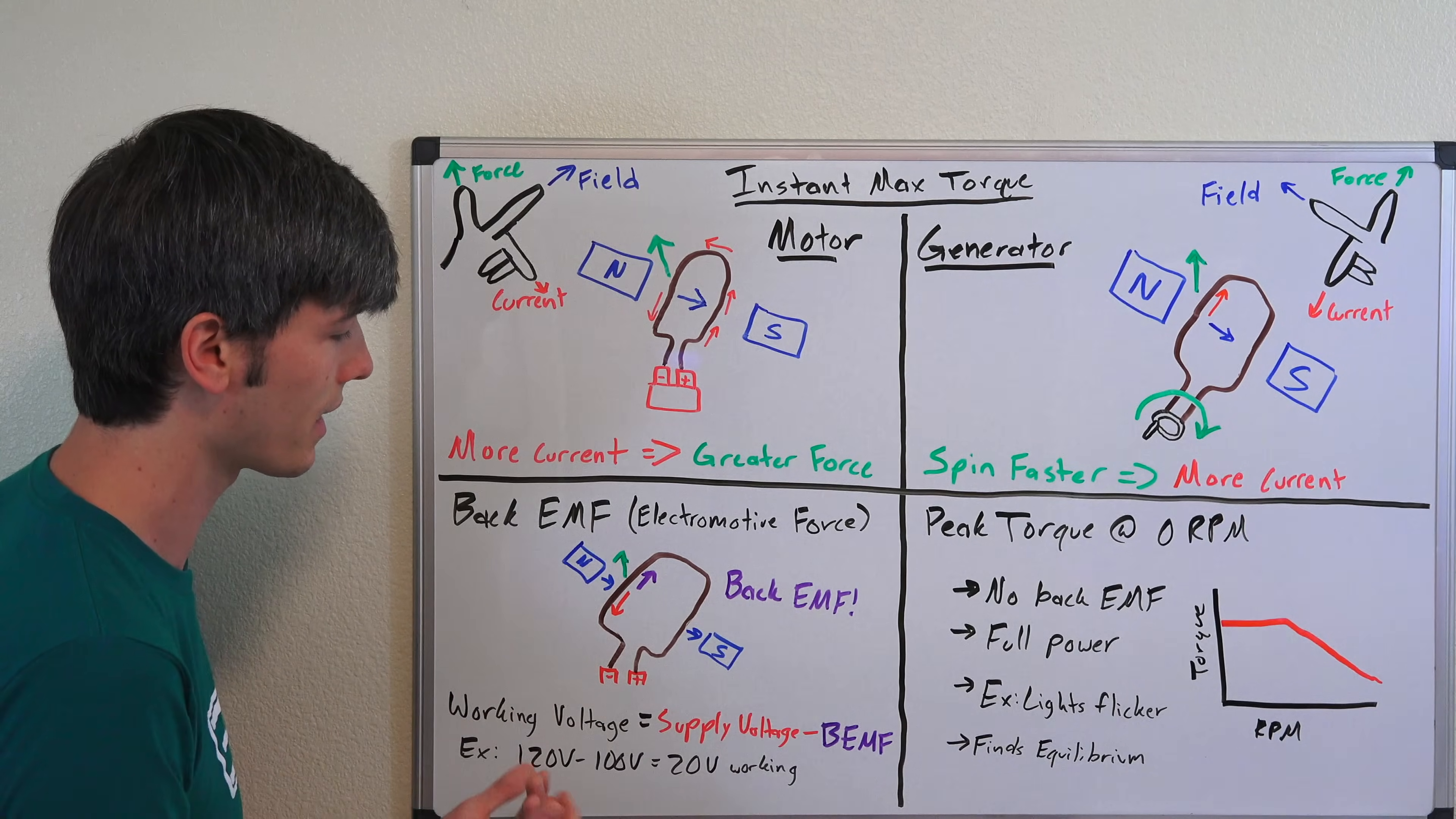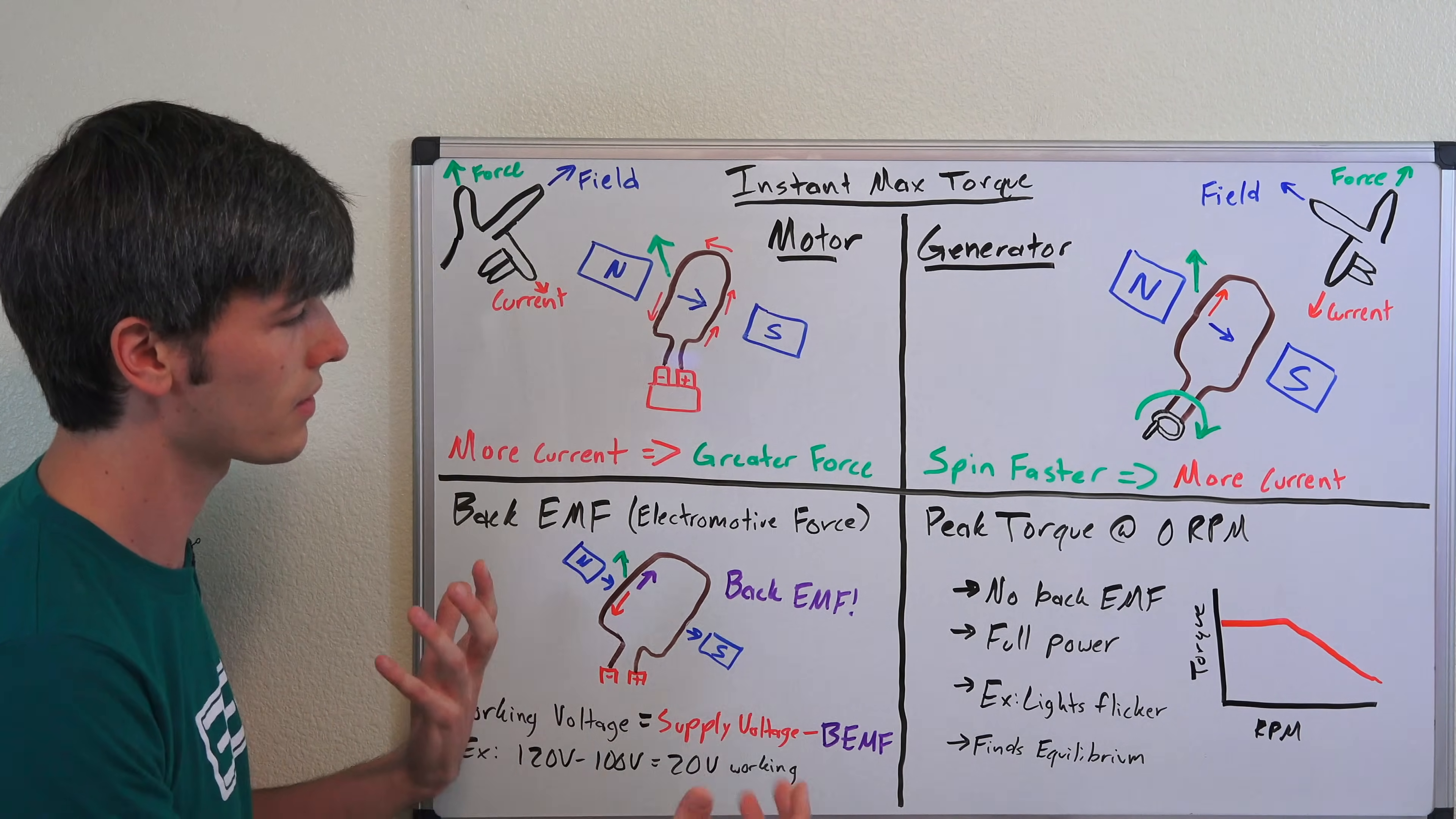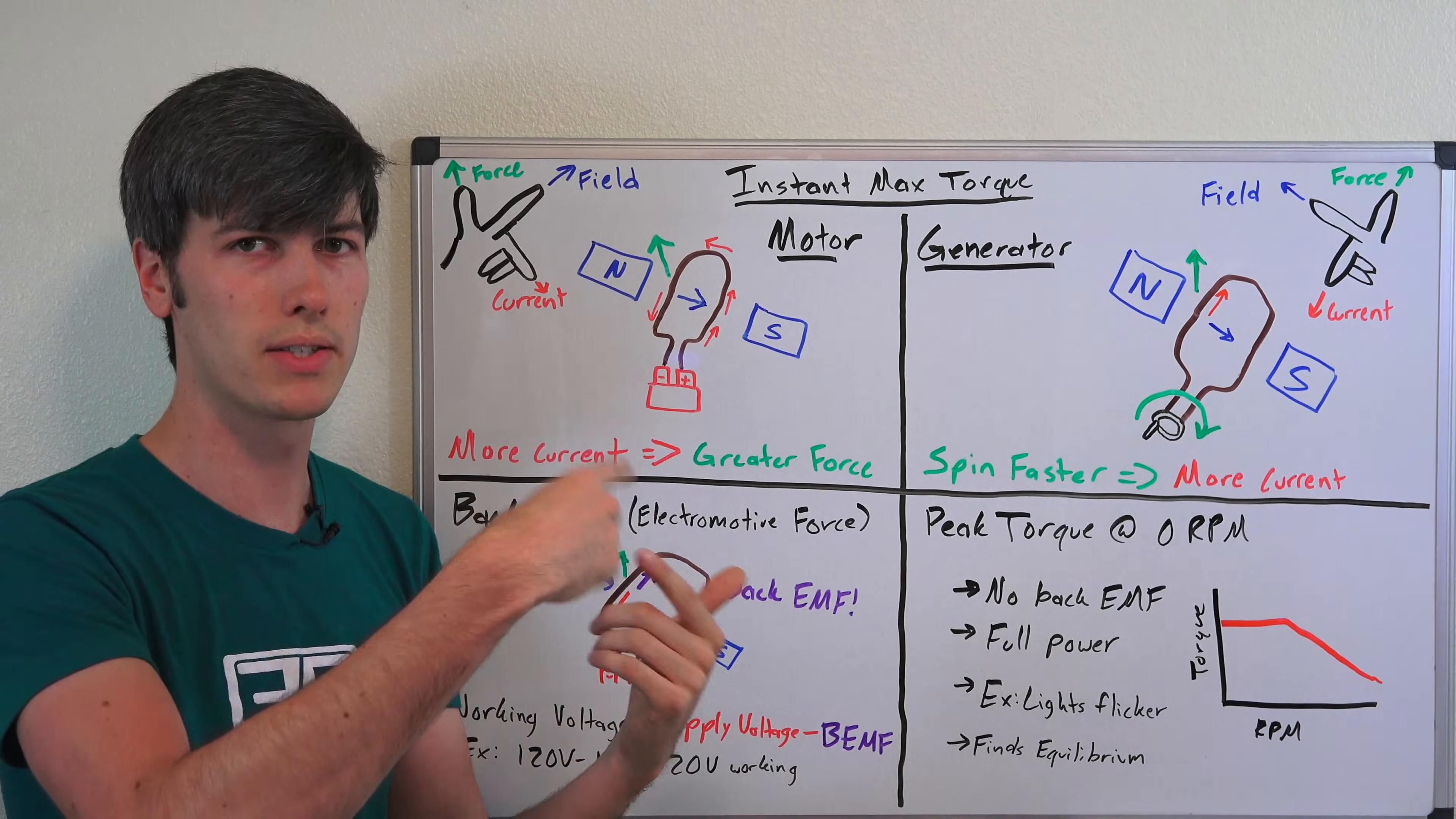So you get full torque available at zero RPM. That's because you're not spinning, you don't have this generator effect of the motor which is kind of working against you in your working voltage. Basically what happens is however much power you supply, that motor is going to find an equilibrium where it spins up to a certain speed where the back EMF and your resistance to moving forward, arrow drag, things like that, are equal.